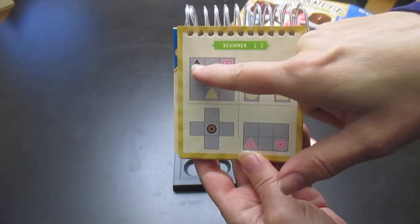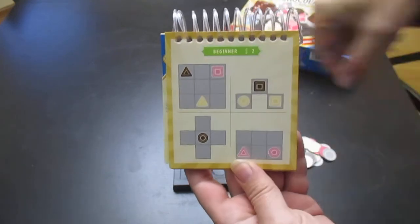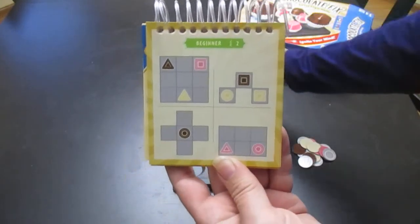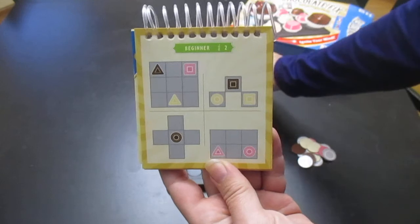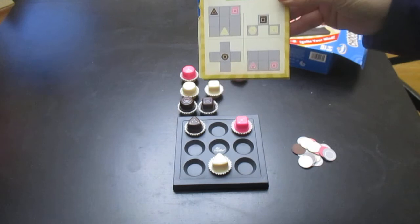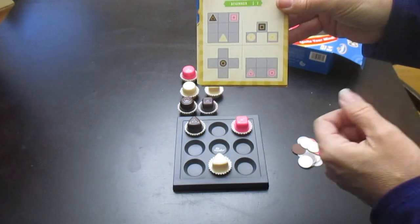So for example, if we start with this one, we have a chocolate in the upper left, a pink square in the upper right, and we have a white triangle in the middle. So we place all our pieces according to what we have on the board.